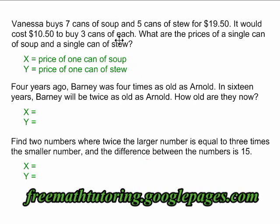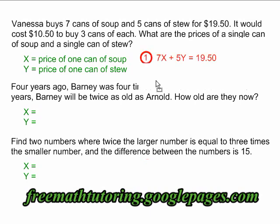When you are working on creating the equations for these types of problems, usually the information for one of your two equations is separate from the information for the other equation. Sometimes it's a comma that separates them and sometimes it's a period. In this case it's a period. The first sentence — Vanessa buys seven cans of soup and five cans of stew for $19.50 — gives me all the information I need to create my first equation: 7x plus 5y equals 19.50.